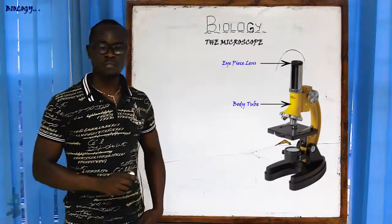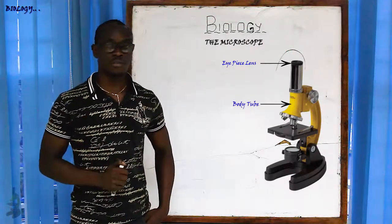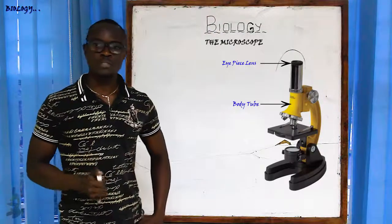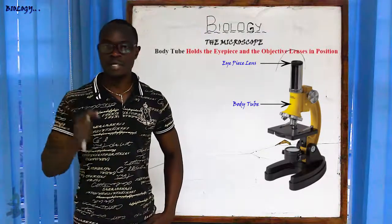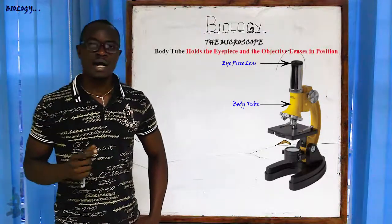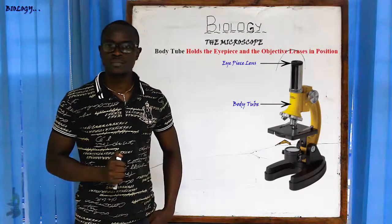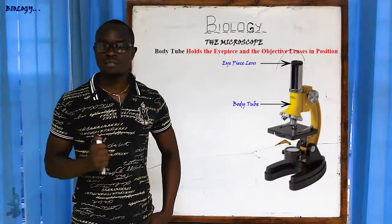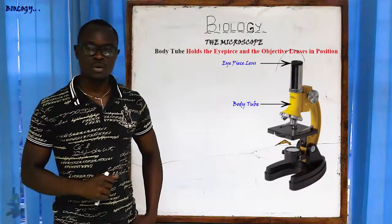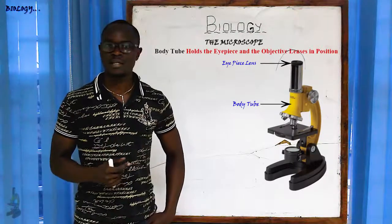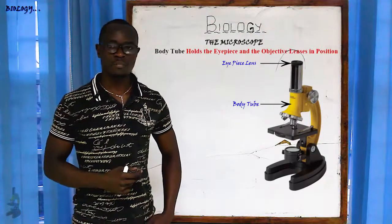Next we have the body tube. The function of the body tube is to hold the eyepiece lens and the objective lenses in position. That's the major function of the body tube.